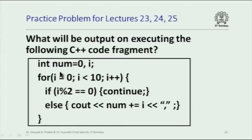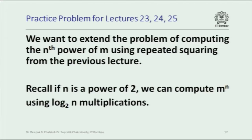Now the last problem. In the last class we saw how to compute n^th power of an integer using repeated squaring: n^2 = n*n, n^4 = n^2 * n^2, n^8 = n^4 * n^4. The number of multiplications is log n base 2. To calculate n^8 you need only 3 multiplications. Now the question is: if m is not a power of 2, write a C++ program with loops to compute m^n using not too many more than log n multiplications — maybe twice log n.